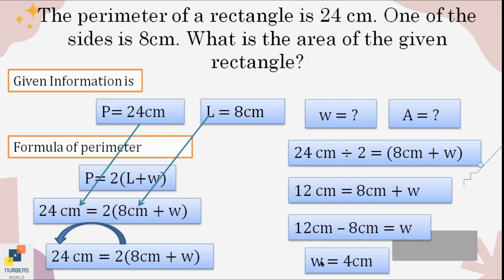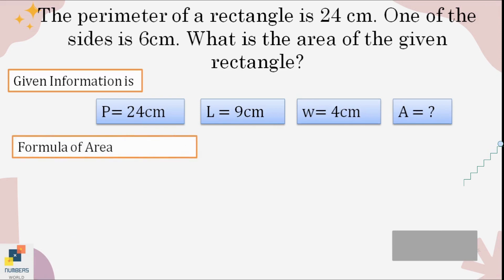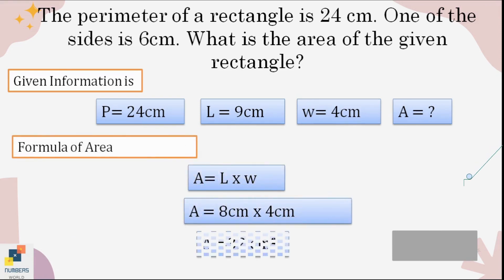When we write the equal sign in the center it doesn't matter which side comes first — both sides are the same. Now we find the area: write the area formula, put in the values length = 8 cm and width = 4 cm, solve it, and the answer is 32 centimeters squared.